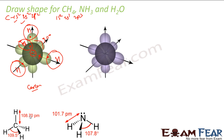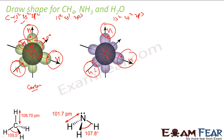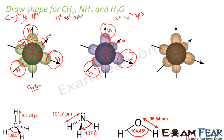Similarly, let's draw for NH3. Nitrogen has atomic number 7, so its configuration is 1s2, 2s2, 2p3. Two electrons in 1s, two electrons in 2s, and three unpaired electrons in 2p. I have to add three hydrogens to these three unpaired orbitals. Since unpaired orbitals overlap, each angle should be 90 degrees. But experimentally we see that the NH3 bond angle is 107 degrees.